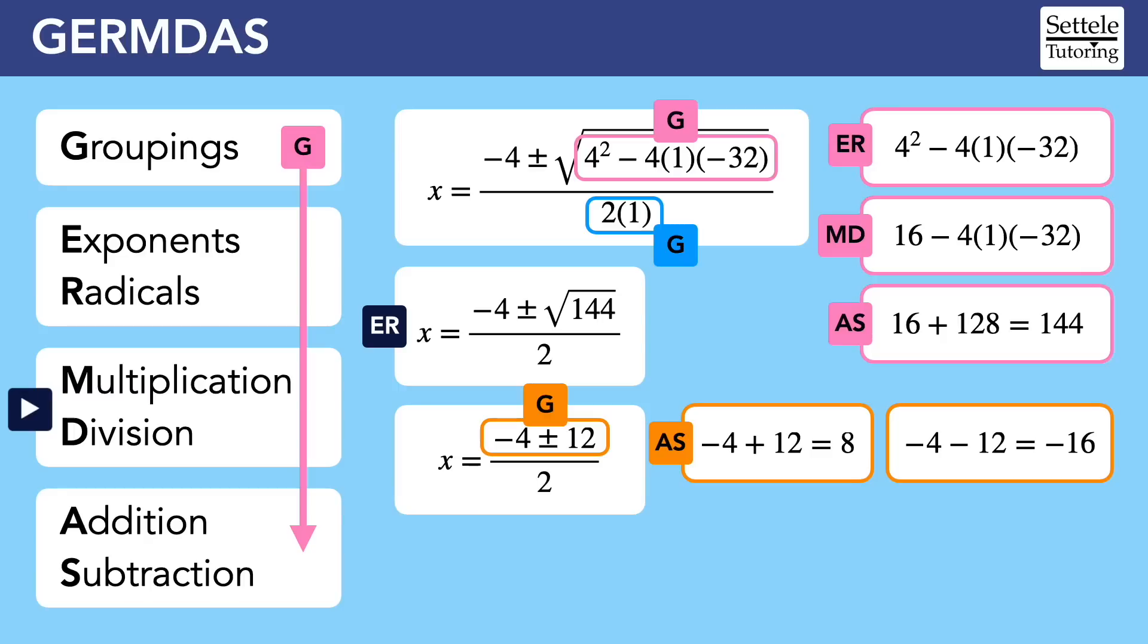We can put those simplified groupings back into the main equation, and now we're able to do the division that we couldn't do before. 8 divided by 2 is 4, and negative 16 divided by 2 is negative 8. We could move on to addition and subtraction, but there's nothing left to do. We have completely simplified our equation down to the two solutions 4 and negative 8.